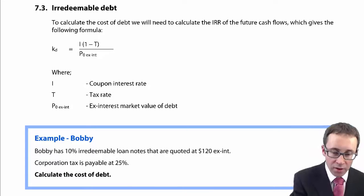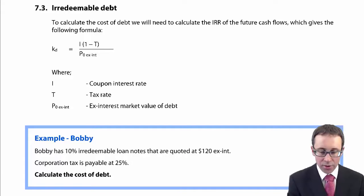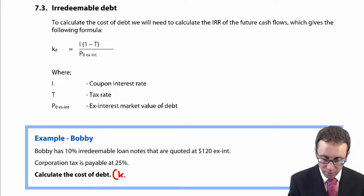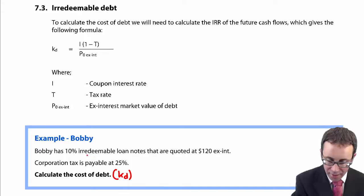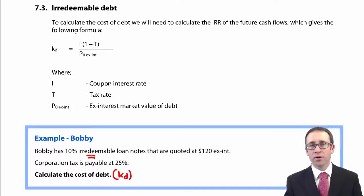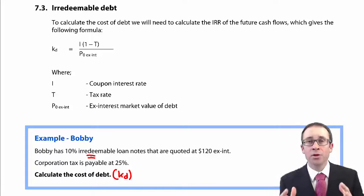So what you've got there on the example is it's Bobby. You can see there that it wants us to work out the cost of debt, KD. And it says we have irredeemable loan notes. So if you have irredeemable loan notes, you jump for joy. Hallelujah. Because you can use the formula.